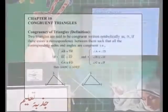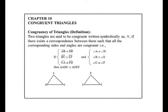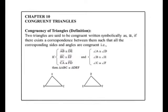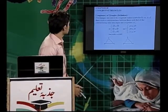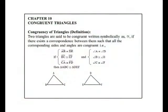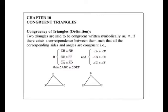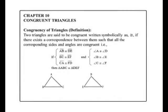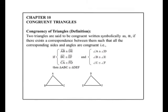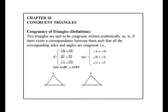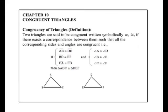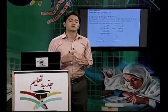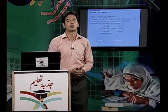Chapter Number Ten: Congruent Triangles. Congruent triangles ایسی triangles ہوتی ہیں جن کی sides یا angles آپس میں برابر ہوتے ہیں۔ Definition: Two triangles are said to be congruent if there exists a correspondence between them such that all the corresponding sides and angles are congruent. مطلب تمام کی تمام sides اور angles اگر congruent ہوں تو وہ triangles آپس میں congruent کہلاتی ہیں۔